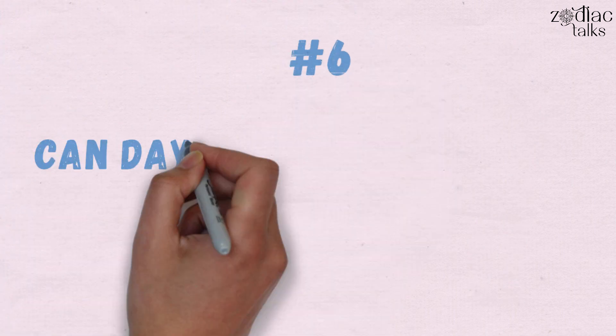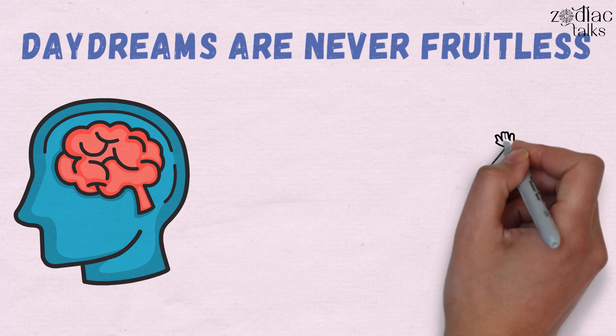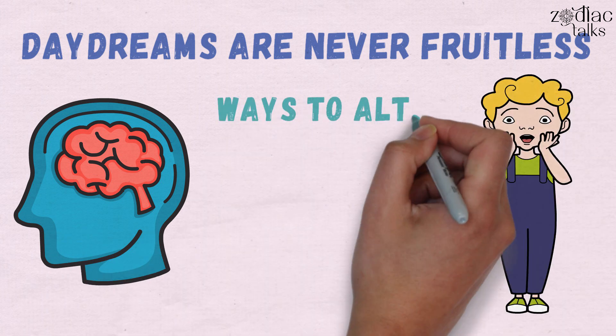6. They Can Daydream For Hours On End. Their daydreams are never fruitless, and their thoughts never cease. If they appear to be zoned out, it's because they're thinking of ways to alter the world, flourish in whatever field they're in, or nurture a brilliant idea.